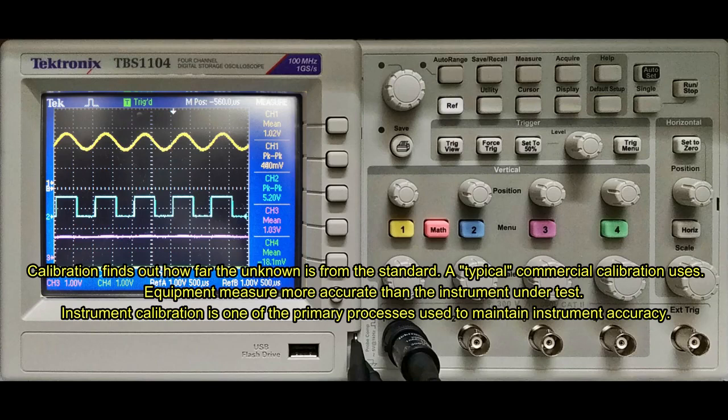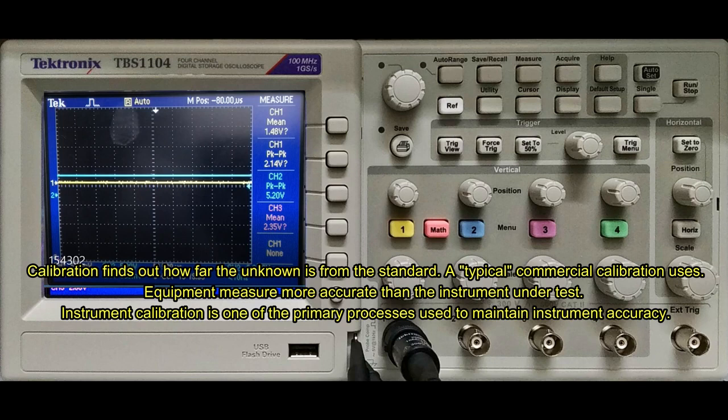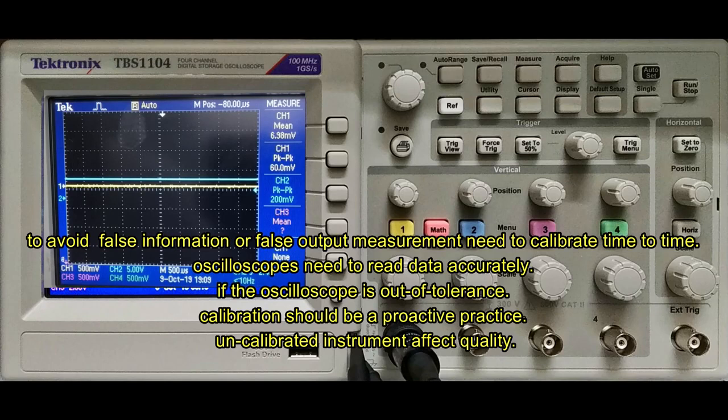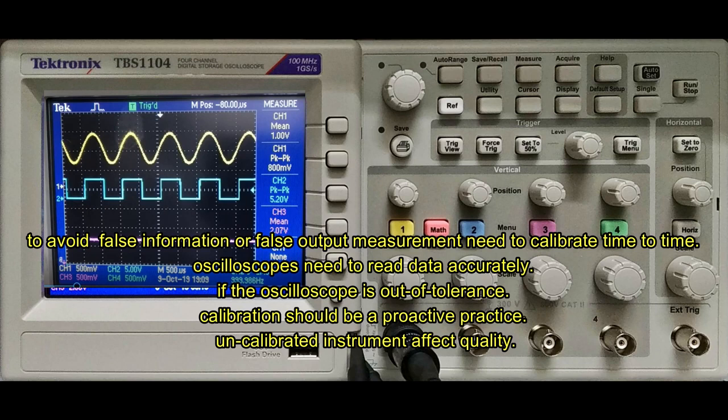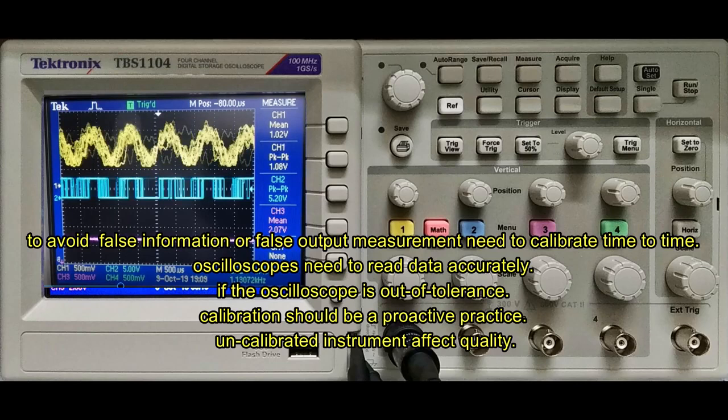Instrument calibration is one of the primary processes used to maintain instrument accuracy. Why calibrate? To avoid false information or false output measurement, need to calibrate time to time. Oscilloscopes need to read data accurately. If the oscilloscope is out of tolerance, calibration should be a proactive practice. Uncalibrated instruments affect quality.